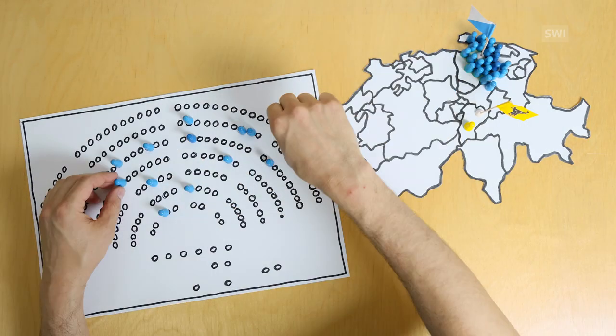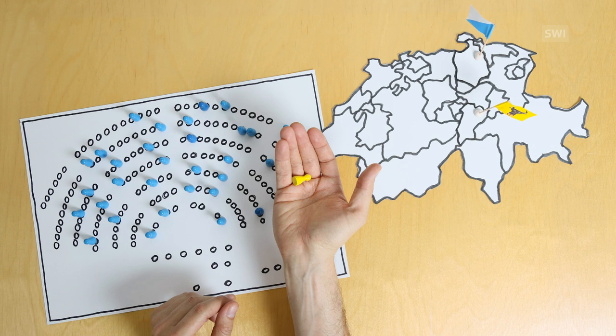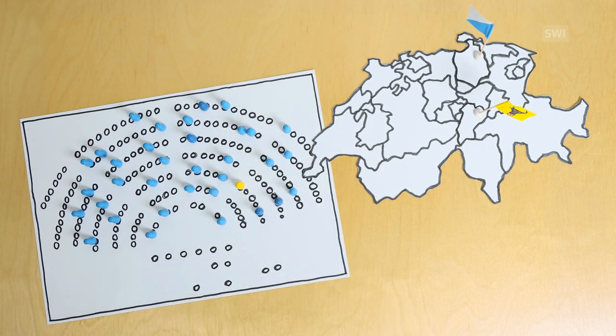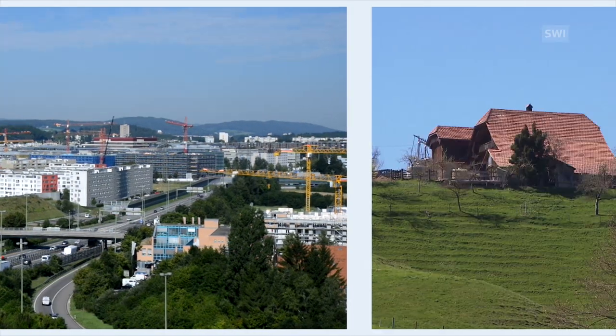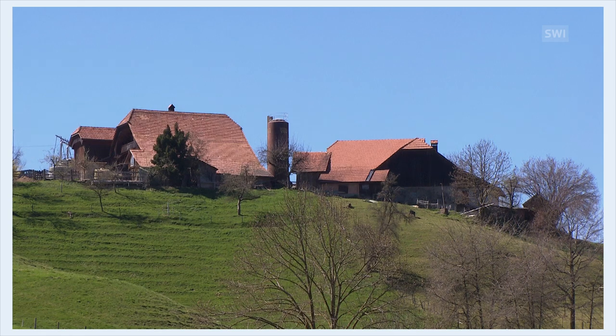Issues important to small cantons tend to be overruled in parliament by issues important to the larger cantons. So the Swiss have found a way to better balance the interests between the majority and those living in less populated regions.